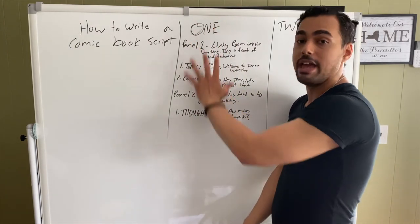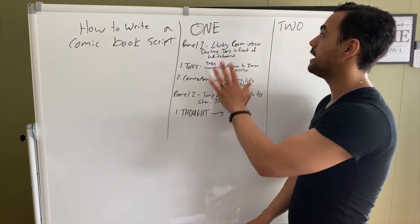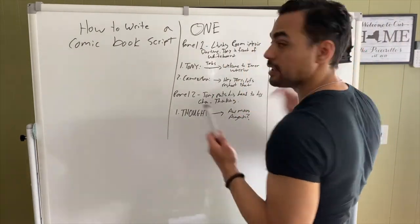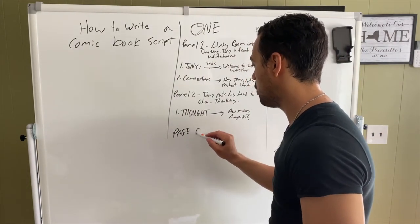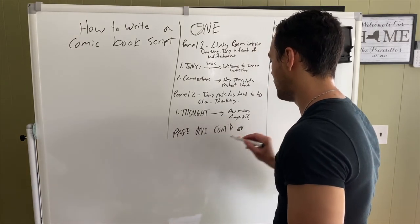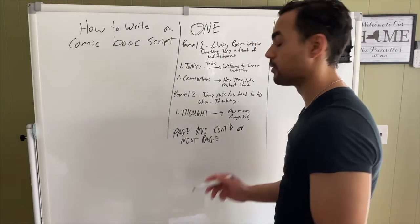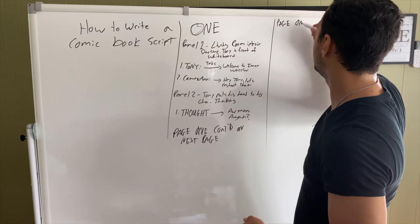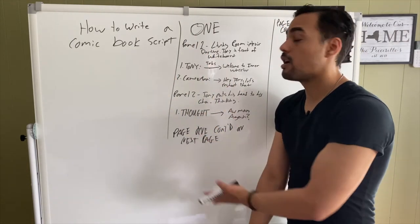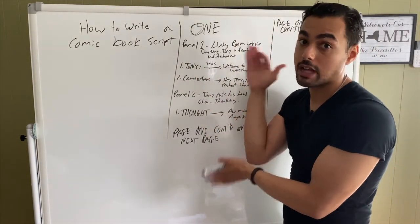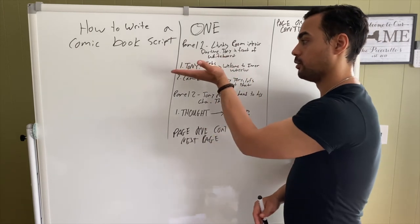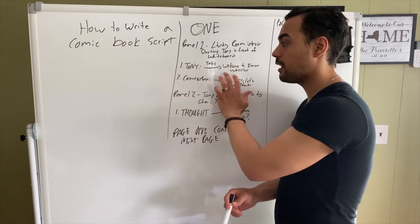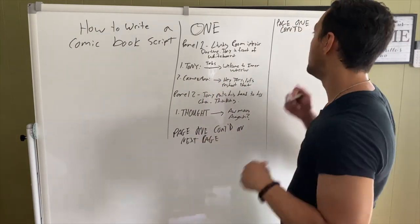Now let's say page one doesn't fit on one physical page — how do we indicate that the next page is a continuation of page one and not page two? At the bottom of page one, we write "Page one, continued on next page." Then at the top of the next sheet, instead of writing "Two," we write "Page one, continue." That way your artist and letterer know the next page is still part of page one of the comic. In each panel, the numbers represent what's going to be lettered — character dialogue, thoughts, or sound effects.